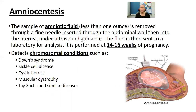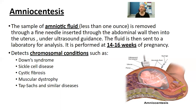Amniocentesis detects chromosomal conditions such as Down syndrome, sickle cell disease, cystic fibrosis, muscular dystrophy, Tay-Sachs, and similar diseases. If you're older — in your 40s — they will recommend amniocentesis because those disorders are more prevalent with age. If blood tests come back with certain markers, they'll test the father to see if they carry those conditions, and may then recommend amniocentesis to check whether the infant would have that disorder.